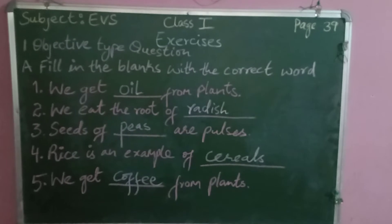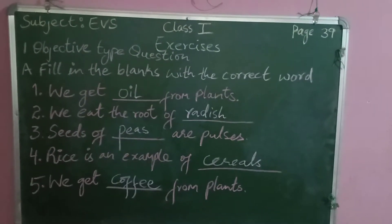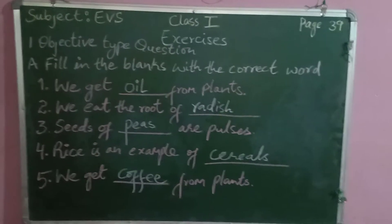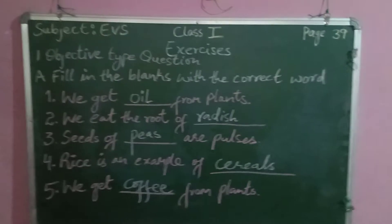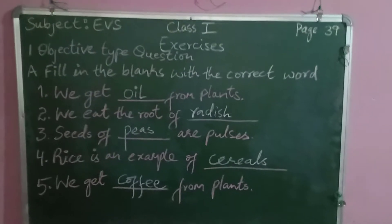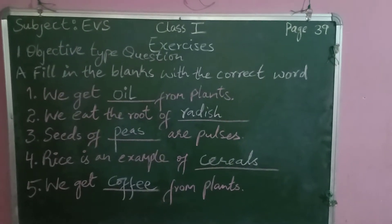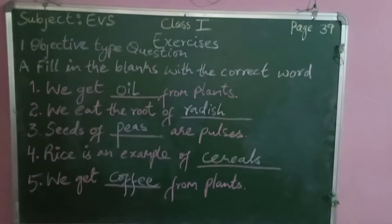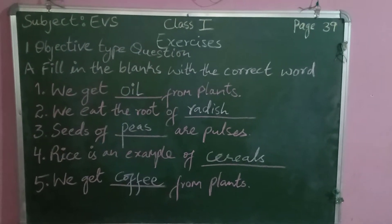Question number two: we eat the root of dash. The options are cauliflower and radish. Radish is your answer.